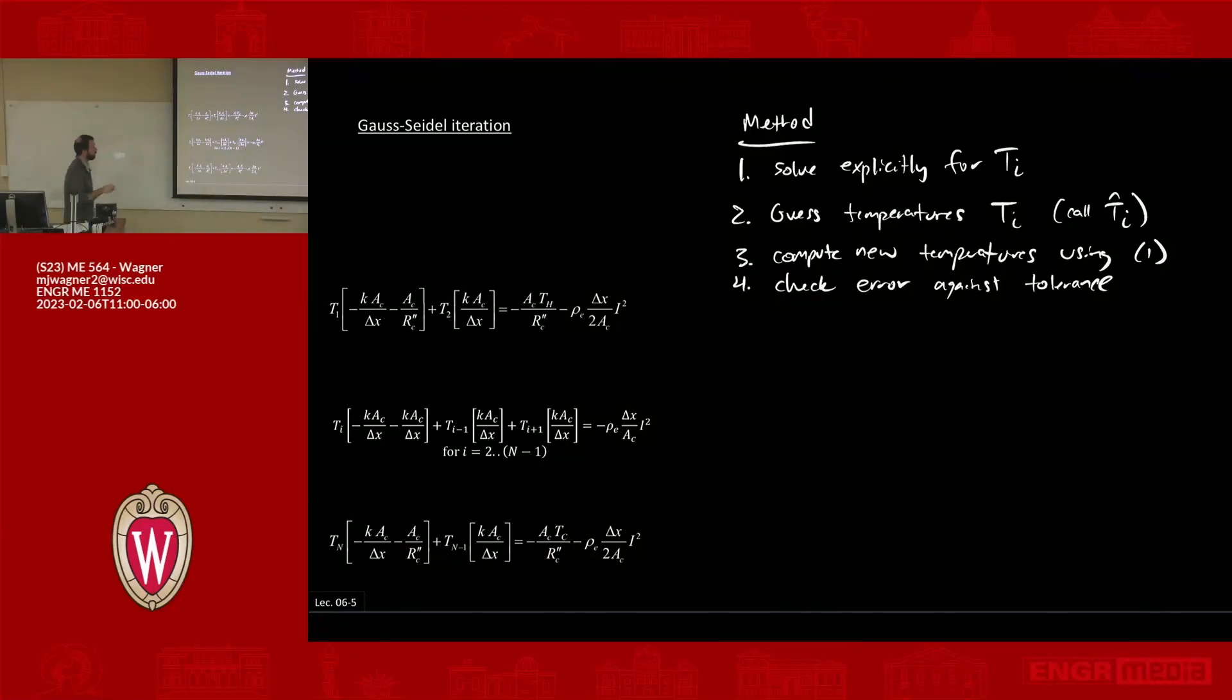Let's just do node i because you can kind of figure out what's going on from that. So if we take node i, step one, solve explicitly for Ti. What does that mean? I want to solve explicitly for this guy here. Everything else would be on the right-hand side. Thinking about this from the perspective of a programming language, I'm trying to find some term that I can use to assign a value to Ti explicitly.